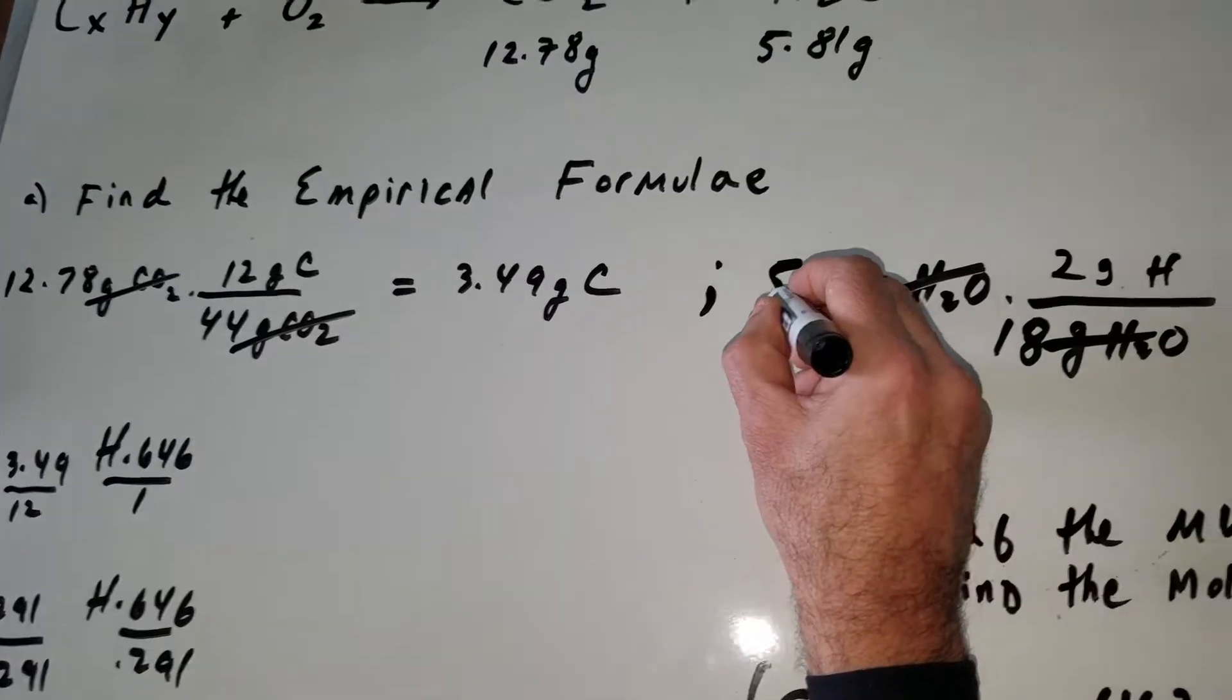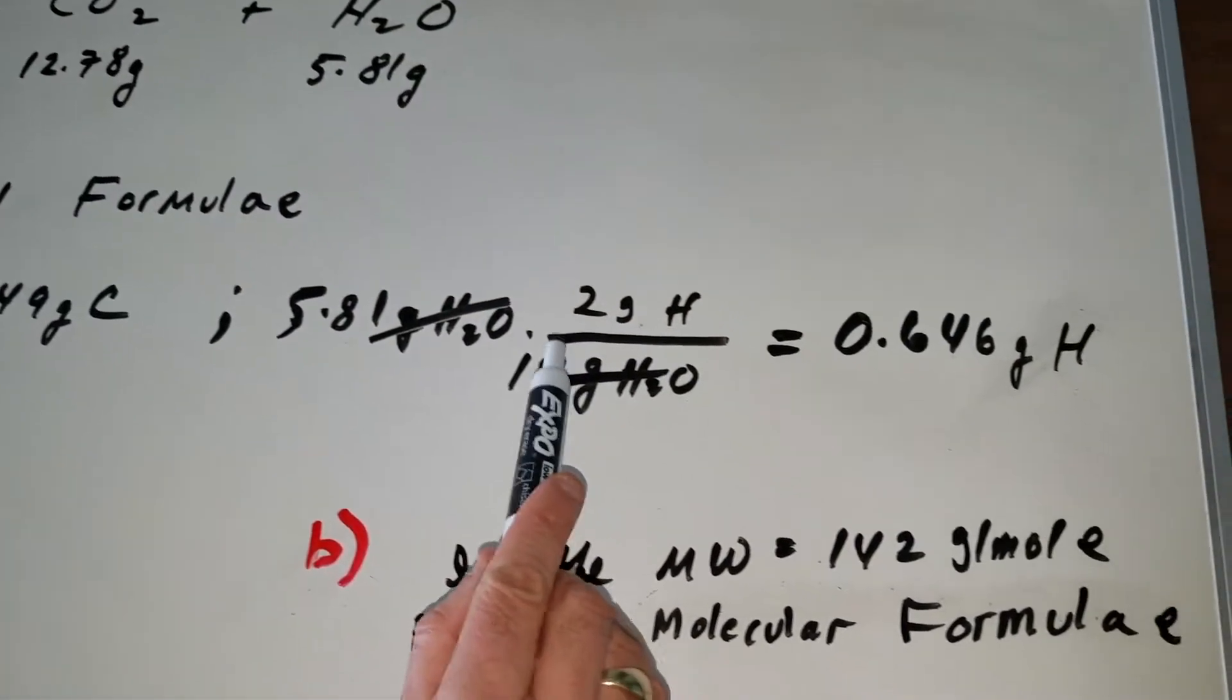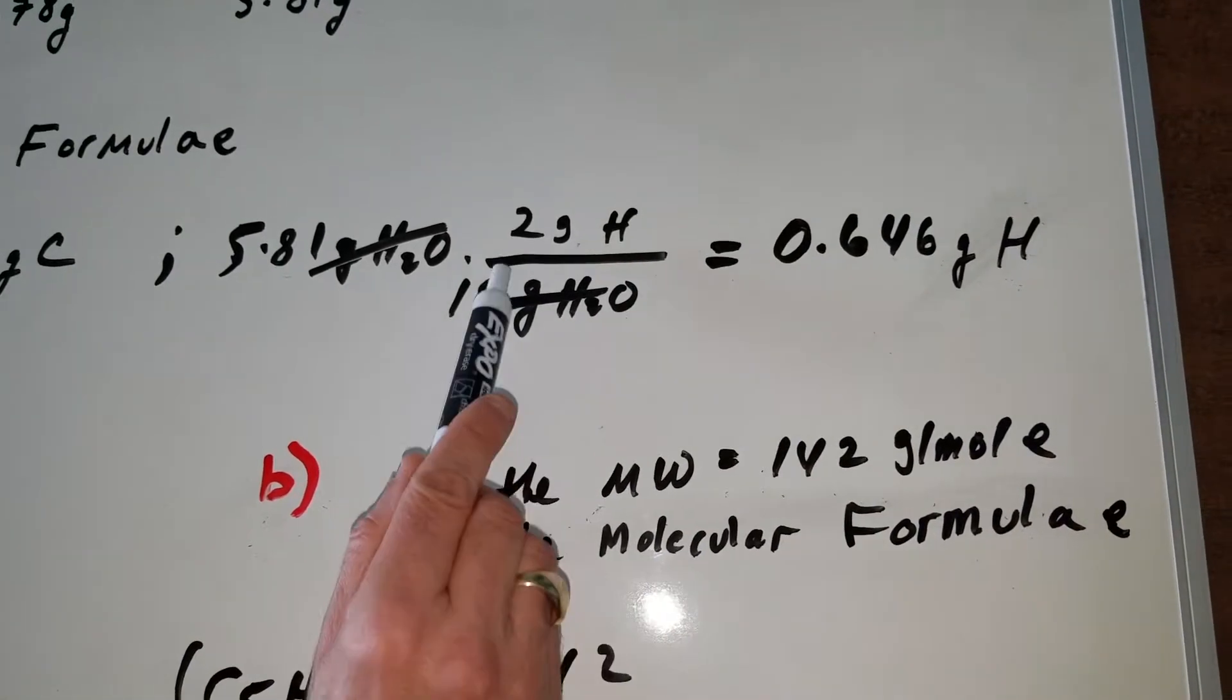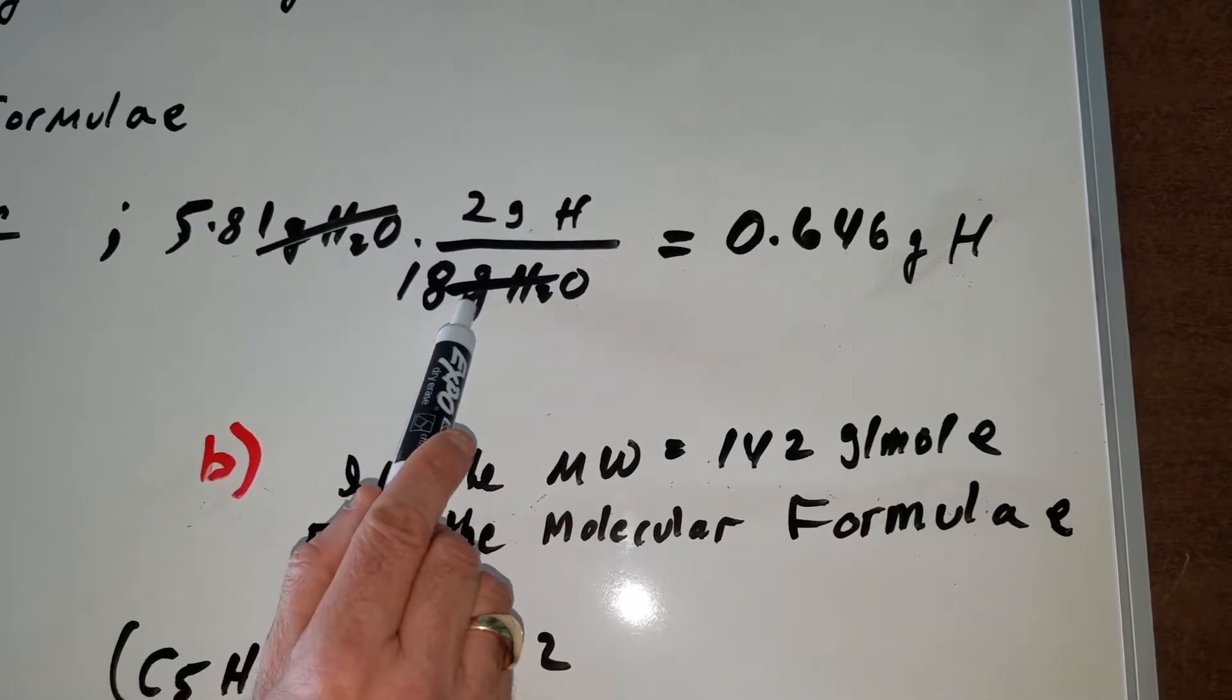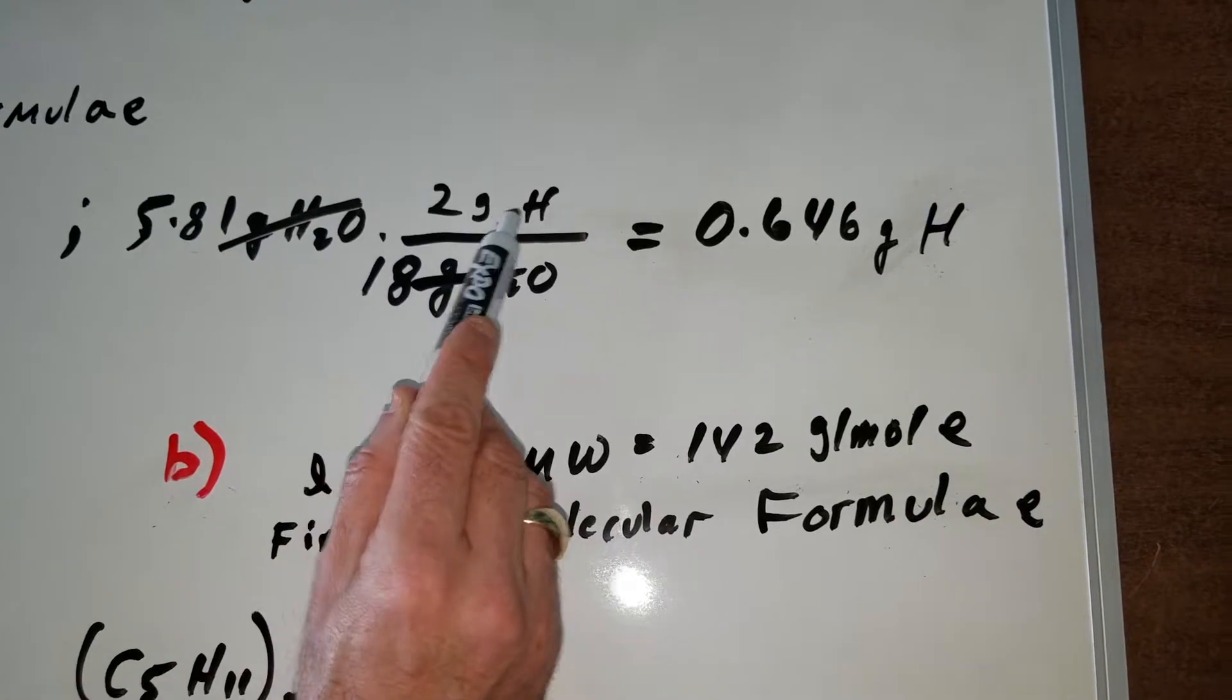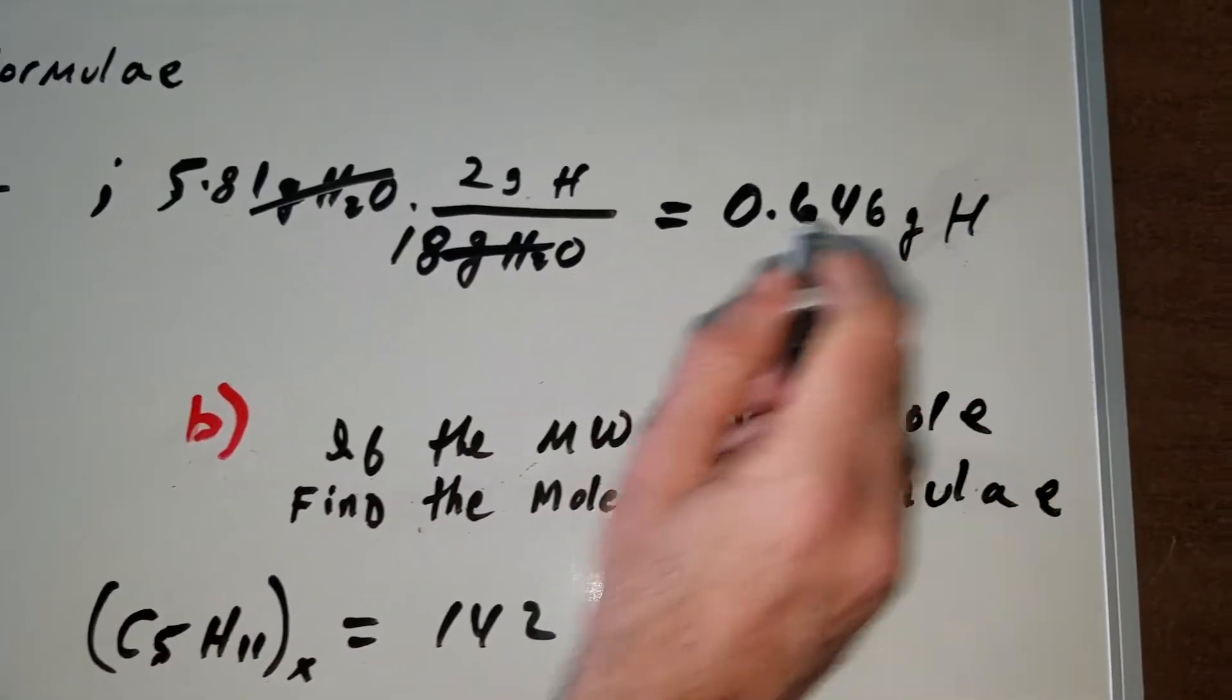Likewise, I have 5.81 grams of water and we know the weight of water is 18, and there's 2 grams of hydrogen in 18 grams of water. Grams of water cancel out and I'm left with grams of hydrogen. Now that I got my grams of carbon and hydrogen, I lay it out.